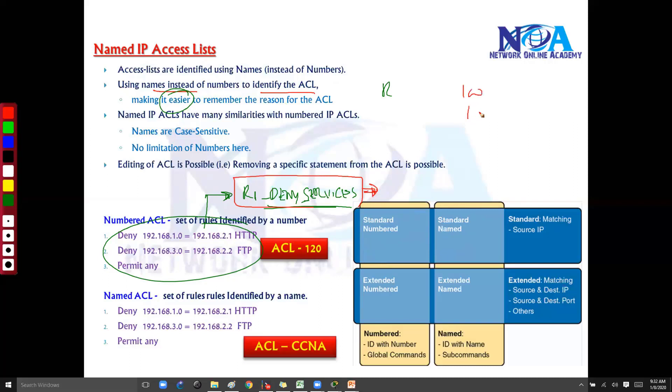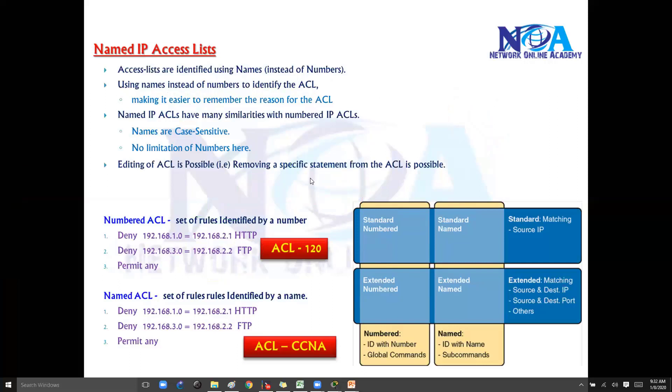So if I'm just using a number, 101, 102, then it's very difficult to figure out which ACL is doing what job unless you verify each and every line. But if I'm giving some meaningful name, it will always give a good idea that this ACL was implemented for this purpose. That is the main reason. Okay, we prefer named ACLs.